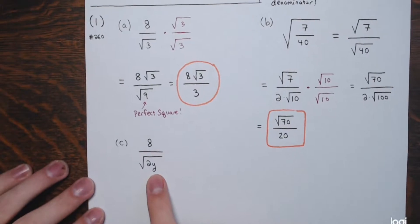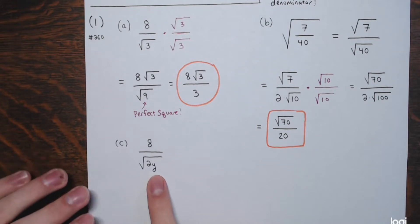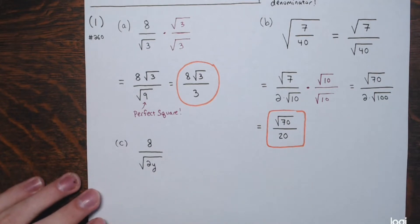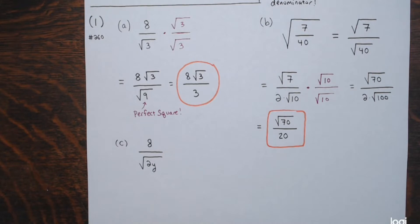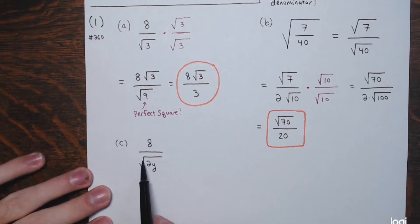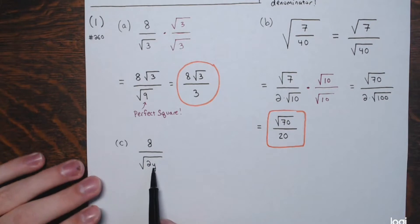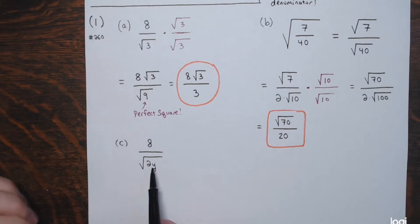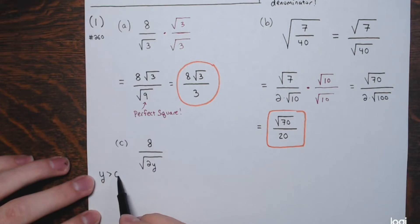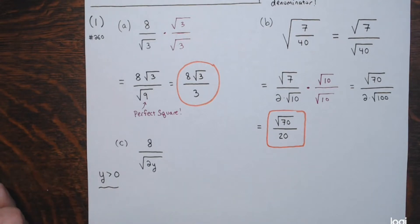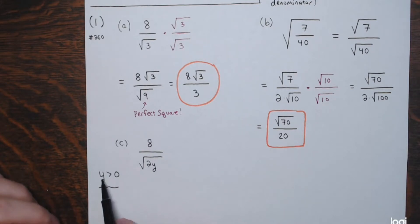Part c has a variable involved. Whenever we have expressions with variables, we should state the domain. For even roots, the radicand can't be negative, so 2y can't be negative, meaning y can't be negative. Also, y can't equal zero because that would make the denominator zero. So y has to be strictly greater than zero — y must be a positive number.